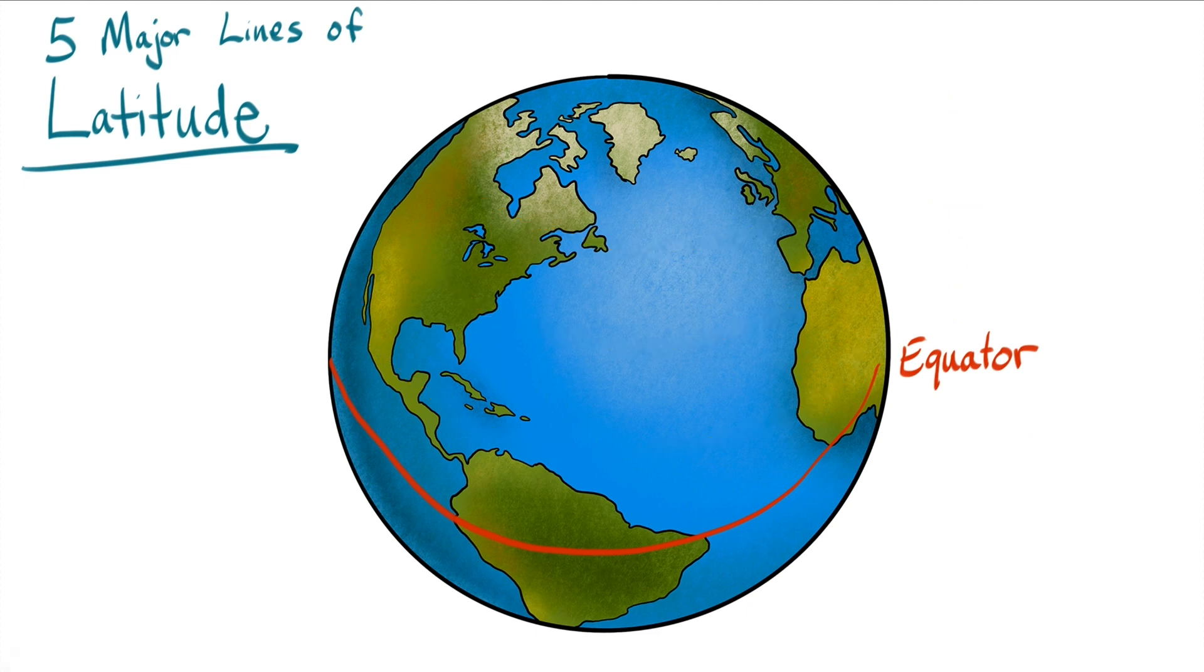So these lines are drawn around the Earth for the purpose of measuring, not just for fun. So we start measuring from the very middle. And we determine the middle by measuring halfway down the Earth from the top and from the bottom of the axis. We also covered the word axis in a previous video too.